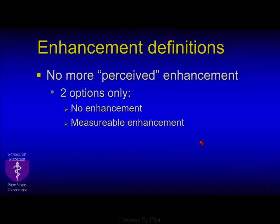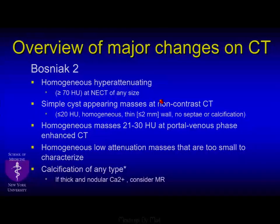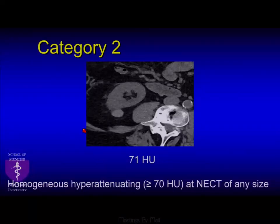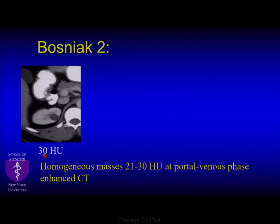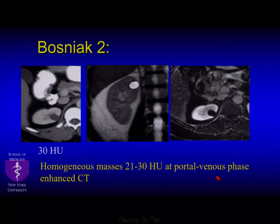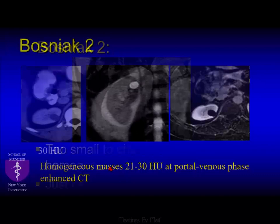We don't use 'perceived' enhancement anymore — it's just: is there enhancement or not? On CT, major new category 2 additions include: homogeneously hyper-attenuating lesions greater than 70 HU that can be ignored on non-contrast CT; cyst-appearing lesions defined as -9 to 20 HU, homogeneous and thin-walled; and lesions measuring around 30 HU that clearly look like the gallbladder with no apparent enhancement — coming out of papers by Corwin and others showing these are benign. This means you don't have to recommend an expensive MRI for these renal lesions.